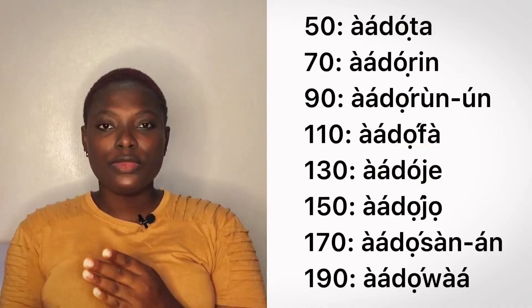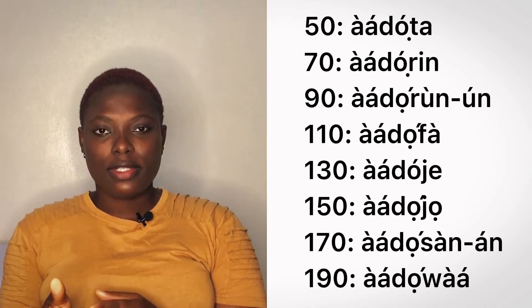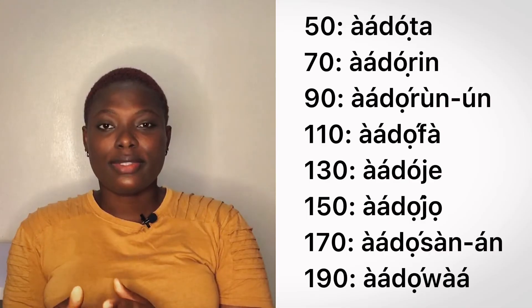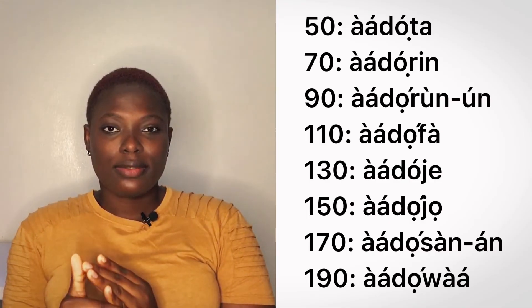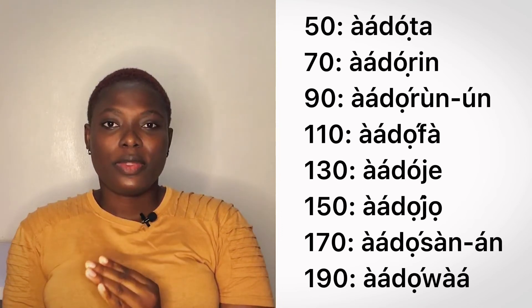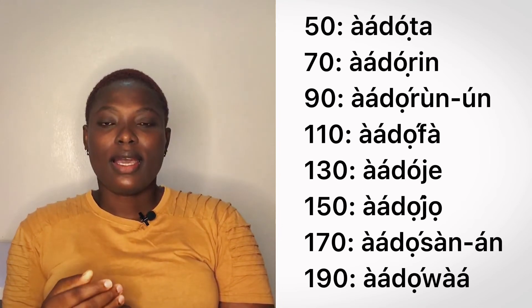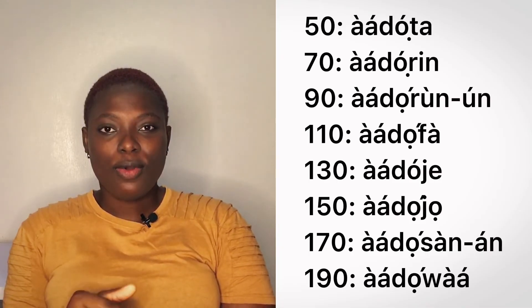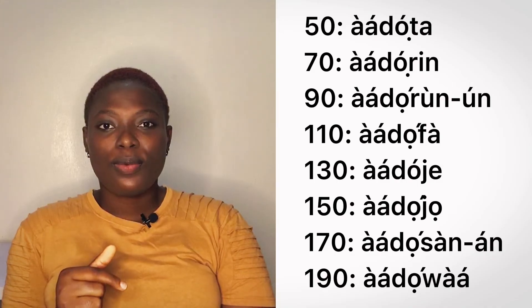And that is the system until you get to 200. The odd multiples of 20 are: adota (50), adori (70), adoro (90), adofa (110), adoji (130), adojo (150), adoso (170).